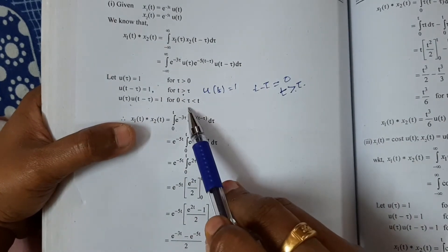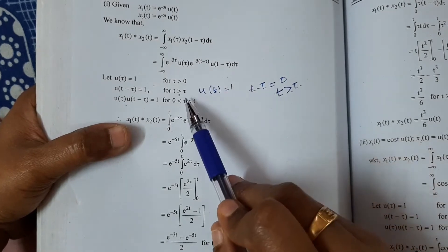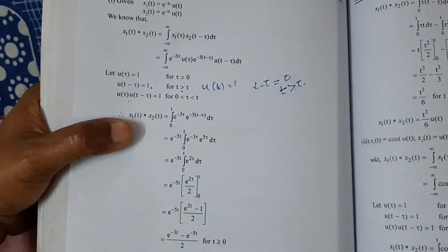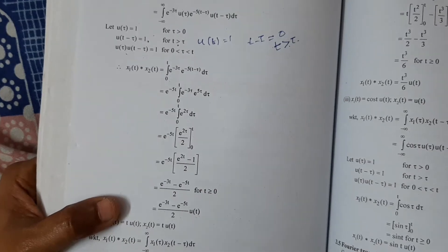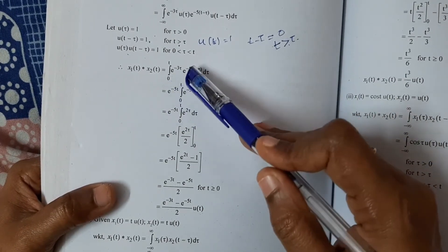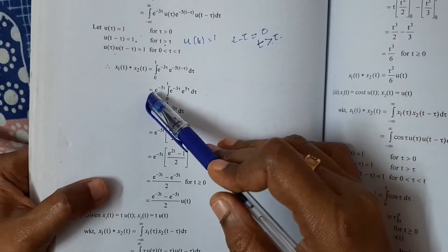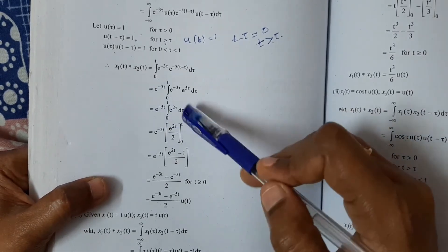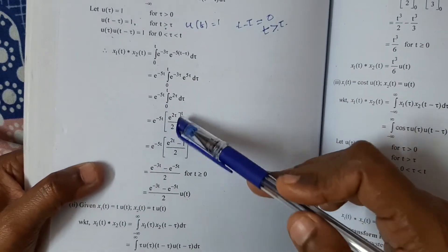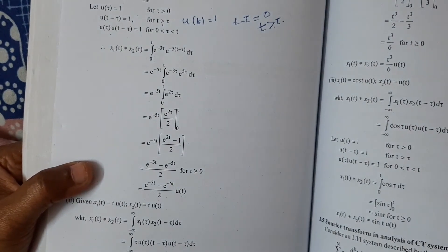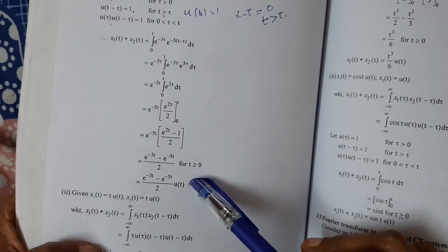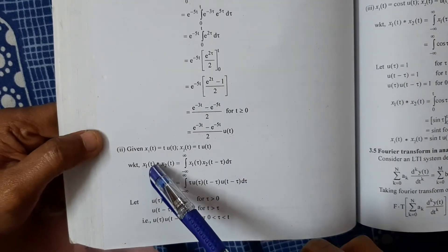The integral runs from 0 to t. We substitute: e^(-3·tau) · e^(-5(t-tau)). Separating the exponential: e^(-5t) · e^(2·tau). Taking e^(-5t) outside the integral, we integrate e^(2·tau) to get e^(2·tau)/2. Applying the limits from 0 to t, we get the final answer for Problem 1.